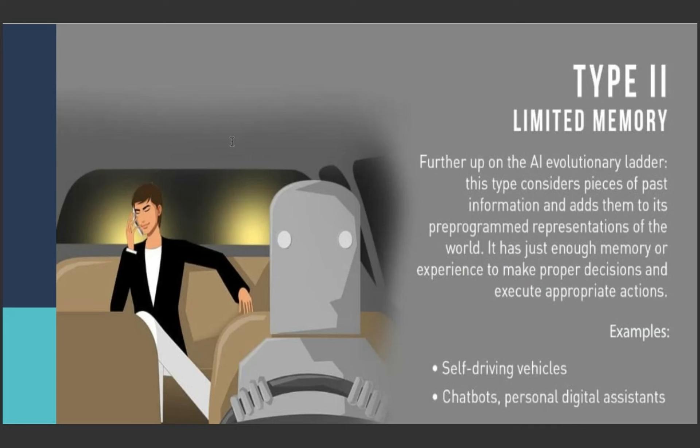Now coming to the next level - Limited Memory. Further up on the AI evolutionary ladder, this type considers pieces of past information and adds them to its pre-programmed representations of the world. It stores past experiences and hence evaluates future actions. It has just enough memory or experience to make proper decisions and execute appropriate actions.